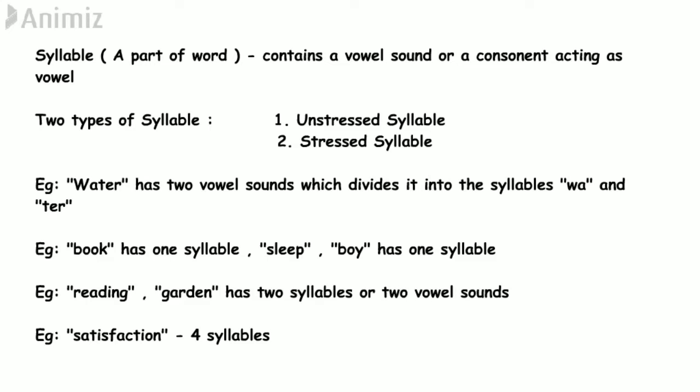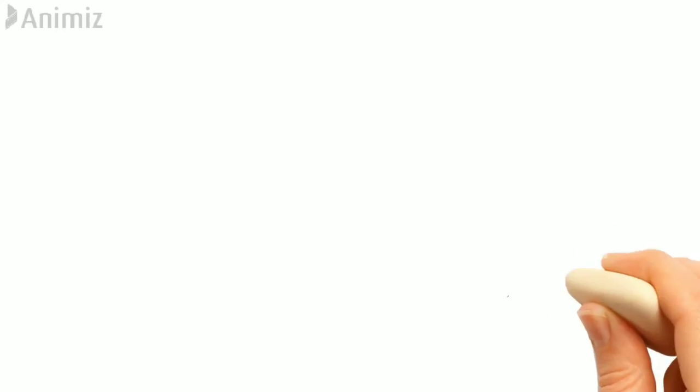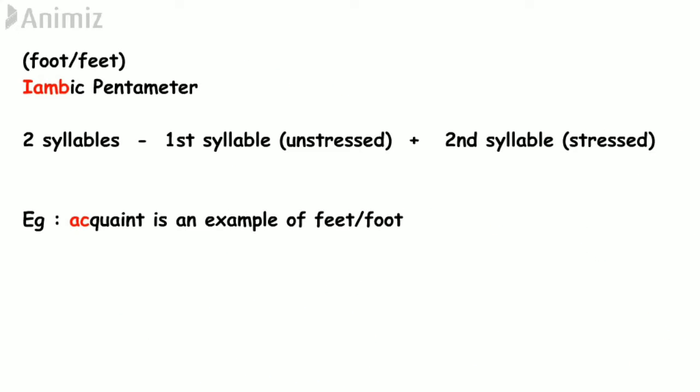After understanding syllables, let us understand what a foot is. Syllables are divided into unstressed and stressed. Take the word 'acquaint' — I give more stress to the later part 'quaint,' so the first part is unstressed and the later part is stressed. This word has two vowel sounds, giving it two syllables. Such a word — in which the first syllable is unstressed and the second is stressed — is known as a foot, or an iamb. The iamb is very familiar because many poems in British poetry are written in iambic pentameter.